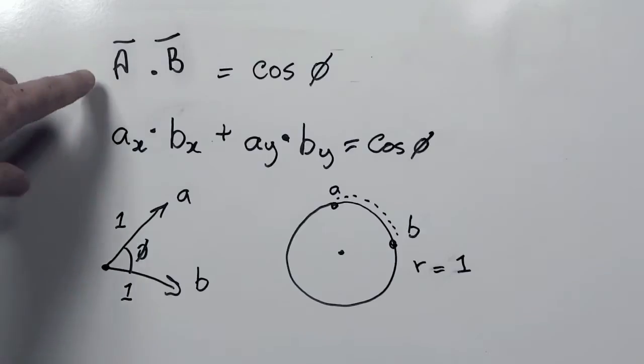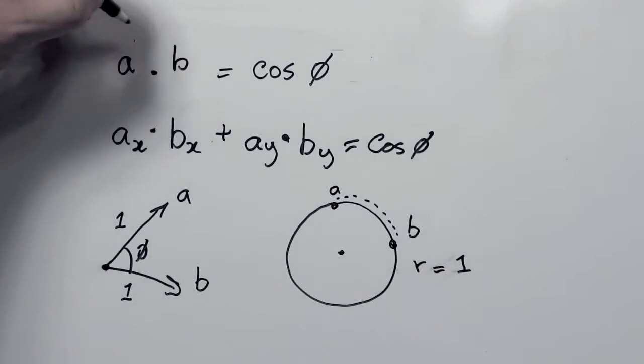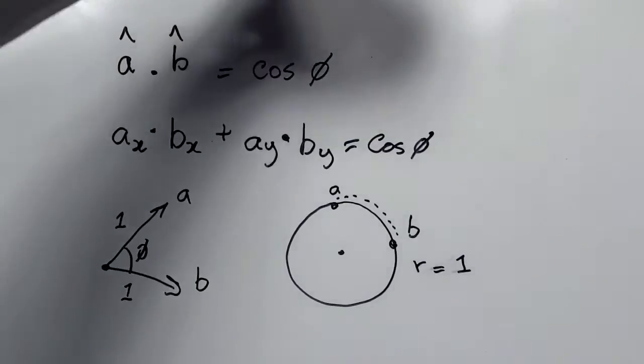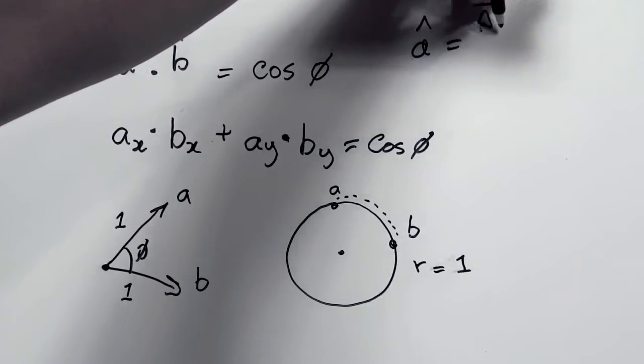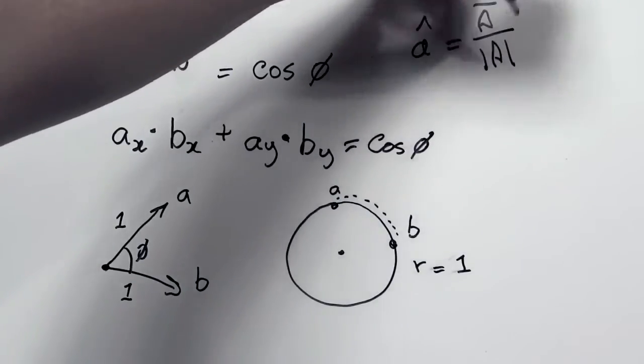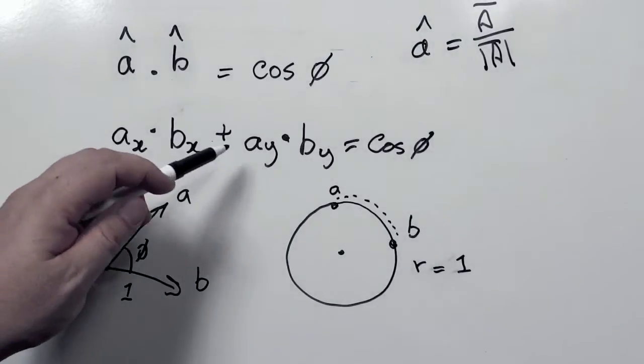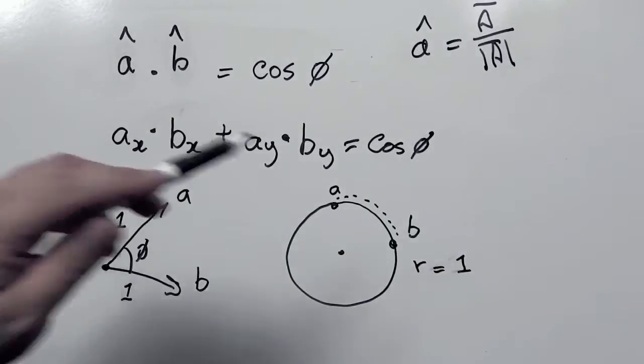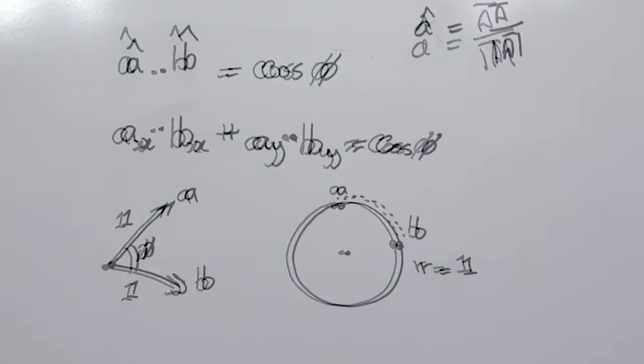From geometry, we know that if we have two unit vectors Â and B̂, they have a hat on them. A unit vector Â, as an example, is calculated by taking the vector A and dividing it by the magnitude of A, so that we end up with a length of 1. The formula for the dot product is Ax·Bx + Ay·By, and that gives us the cosine of the angle between those two vectors.